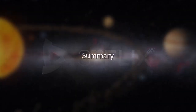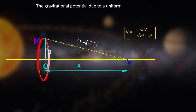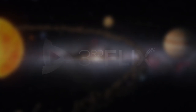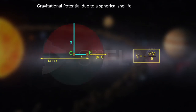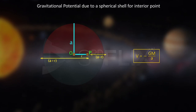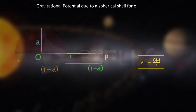Summary: The gravitational potential due to a uniform ring at a distance x is minus Gm by the square root of a squared plus x squared. The gravitational potential due to a spherical shell for any interior point is constant and equal to the gravitational potential on its surface. For any exterior point at a distance r from its center, it is minus Gm by r.